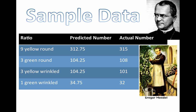Take a look at some sample data here. If we use this as our predicted ratio and based on some calculations this is what we expect, then our numbers — look at this, 315 — are pretty close to the predicted numbers. So we can assume that what was being investigated here, the seed color and seed shape, does follow Mendel's law of independent assortment. Therefore, we can conclude that these two genes controlling seed color and seed shape must be on different chromosomes.